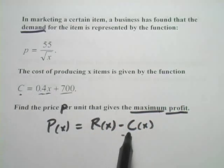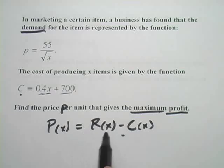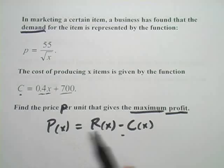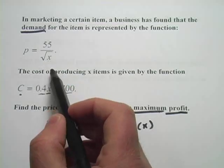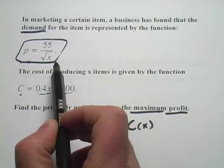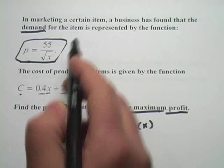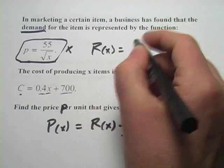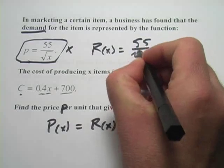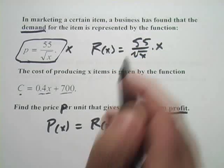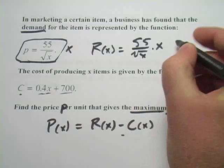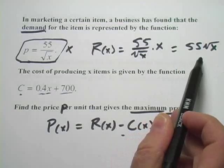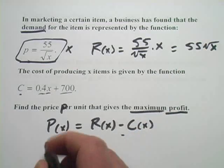We've got C already. We just need the revenue. Well, what's the revenue going to be? The revenue is the price you charge times the number of things that you sell, and we've already said that x is the number of units you sell. This function is the price that you charge per unit. So if you multiply this times x, you're going to get your revenue function. So our revenue will be 55 over the square root of x times x. And if we simplify here, we can change that to 55 times the square root of x. So there is our revenue function. So let's set up our profit function now.